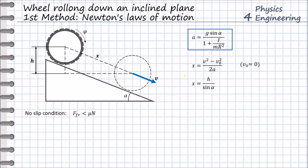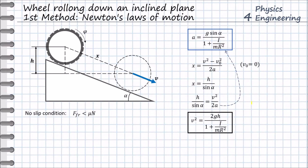We connect these two equations and substitute the expression for a. In this way we derive the linear velocity of the wheel at the end of the path. So we have our complete solution for method one: the linear acceleration a and the linear velocity v of the wheel.